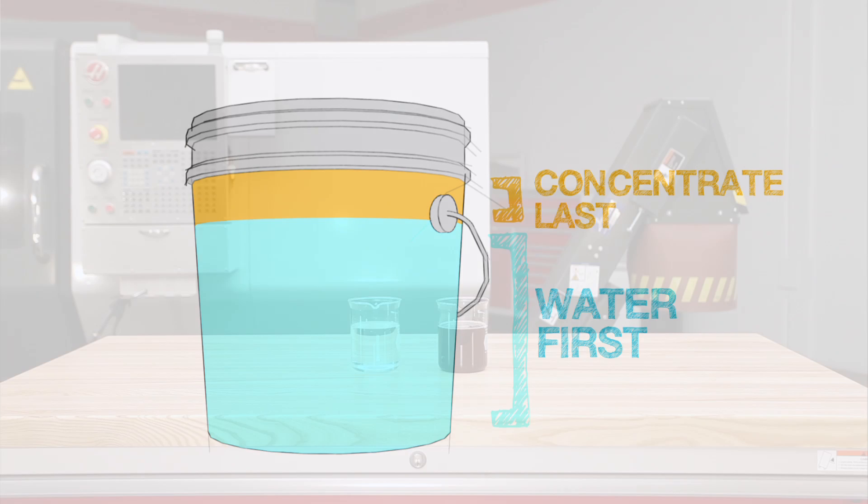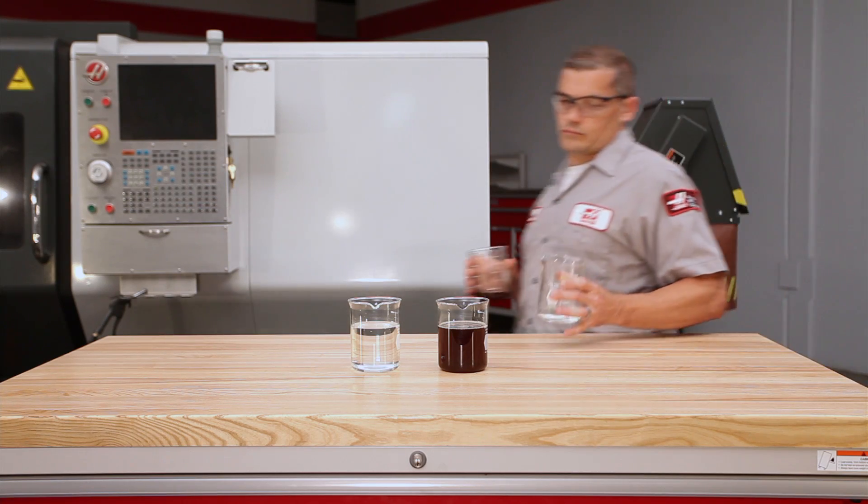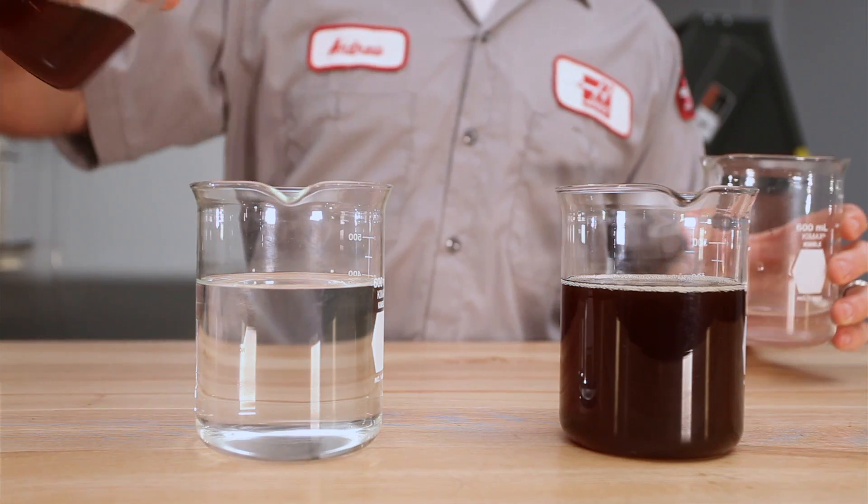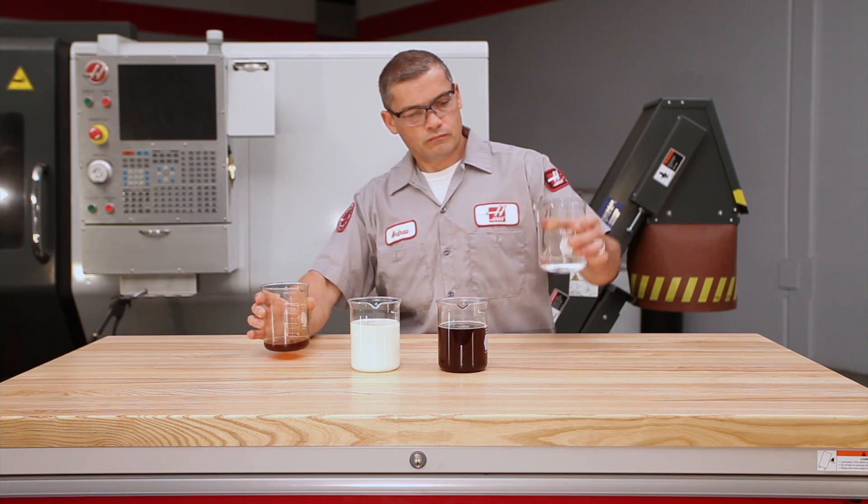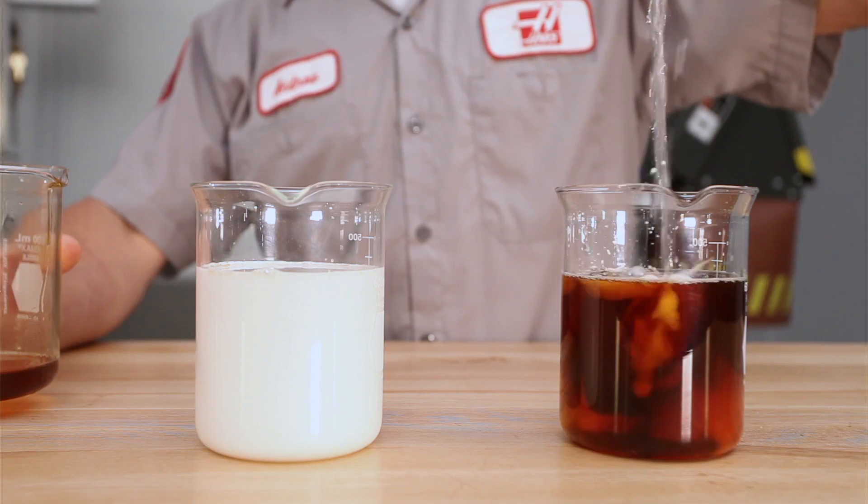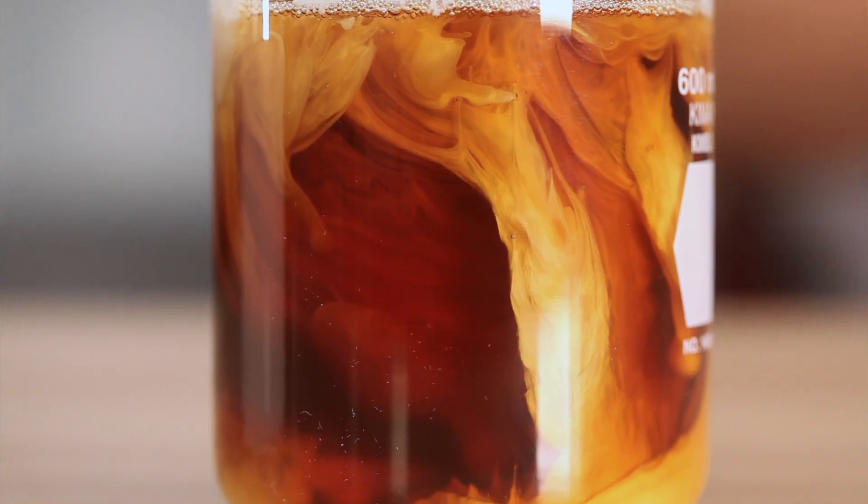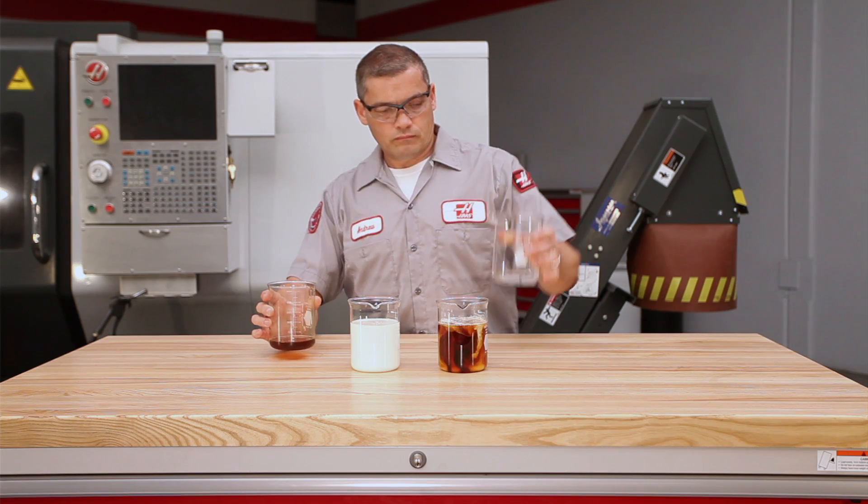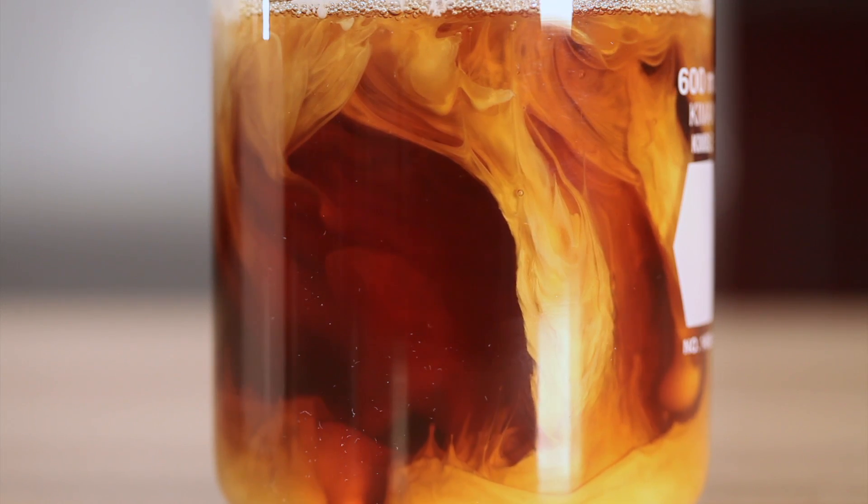Here is a visual demonstration of mixing both the right and wrong way. On the left is the correct sequence where concentrate is poured into water. You can see how easily the concentrate disperses. On the right we start with concentrate in the container. This is incorrect. As the water is poured in, you can see that it tends to clump together separately from the concentrate.